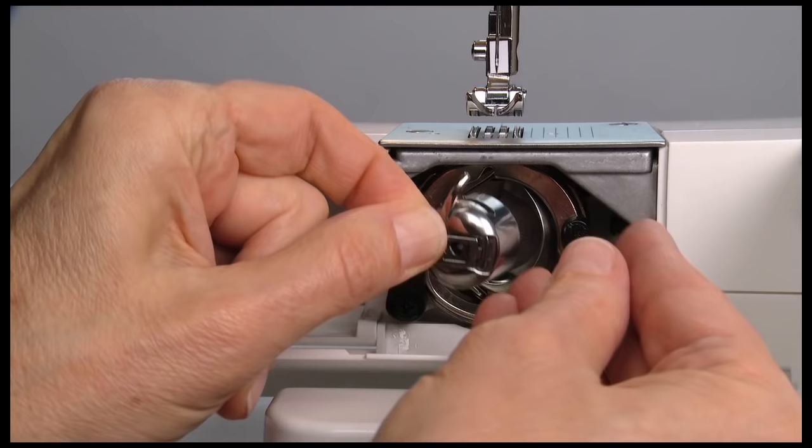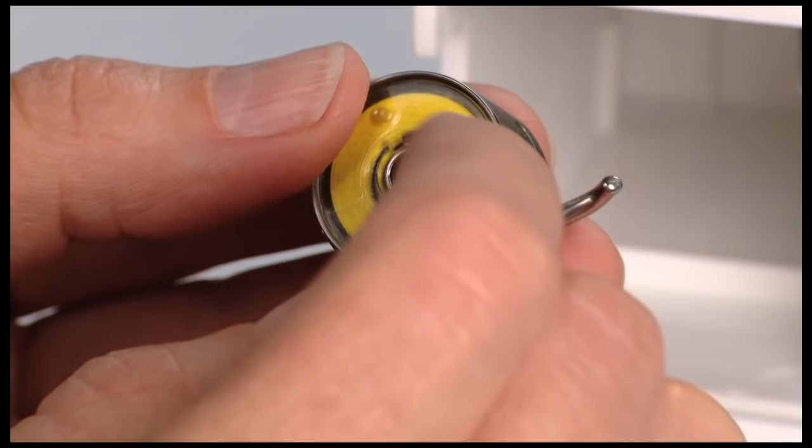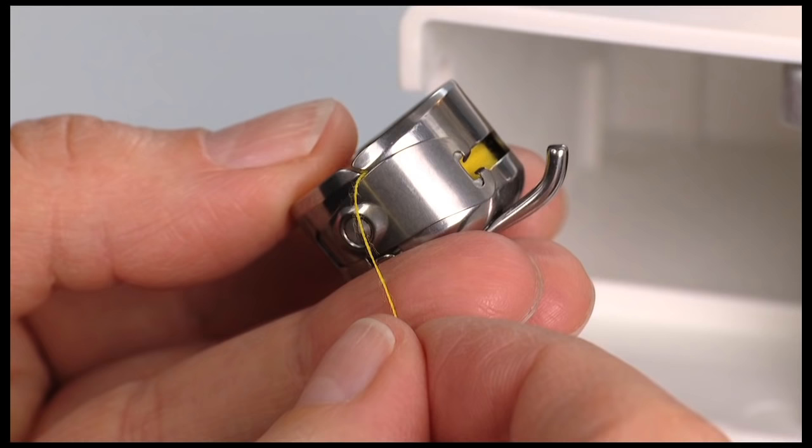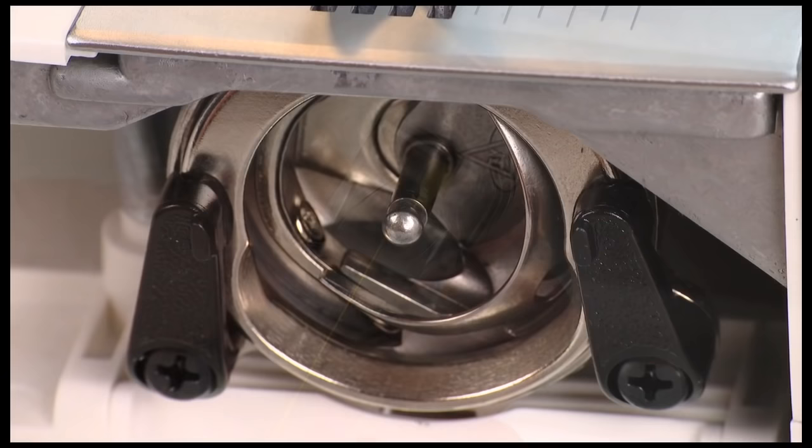Hold the bobbin case with one hand. Remove the empty bobbin. Insert the full bobbin so that the thread moves in a clockwise direction. Pull the thread through the slit and under the finger.